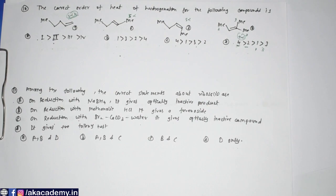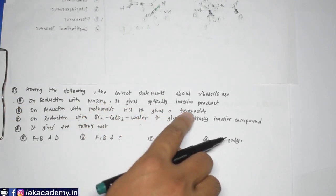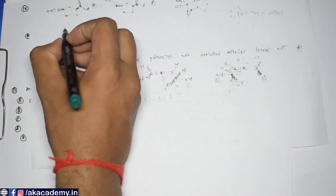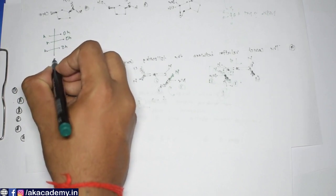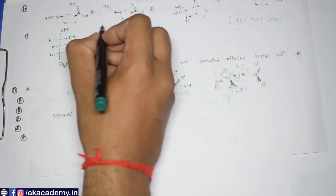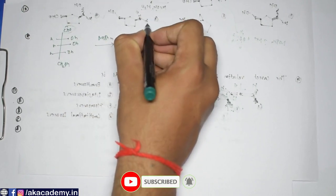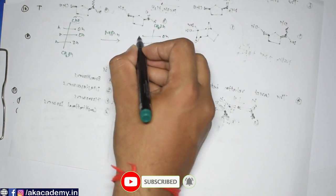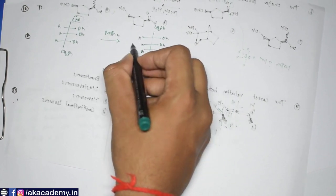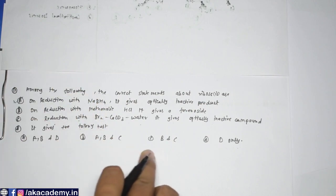The next question is about ribose. On reduction with NaBH₄, does ribose give an optically inactive compound? The structure of ribose has –OH, –OH, –OH, –OH with CH₂OH at both ends after reduction. When the aldehyde is reduced to CH₂OH by NaBH₄, the resulting ribitol has a plane of symmetry, making it optically inactive. So option A is correct.